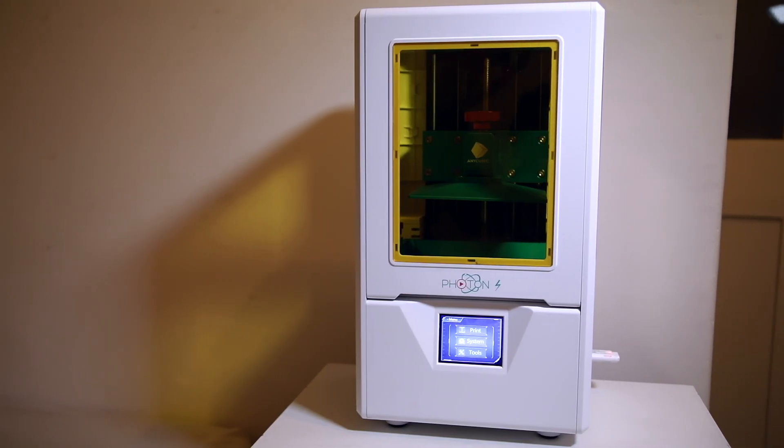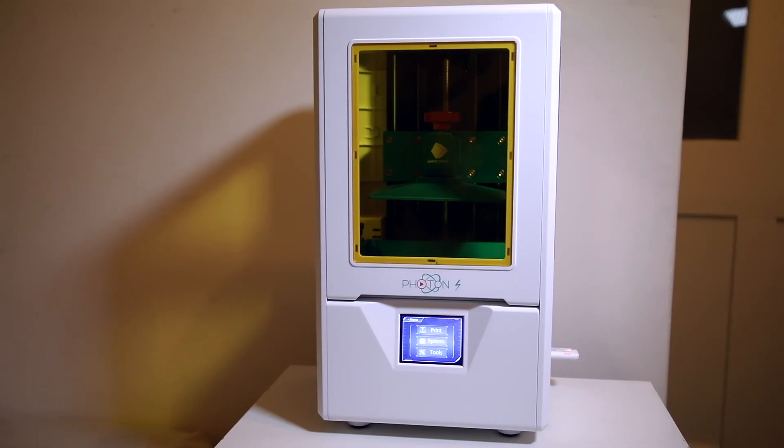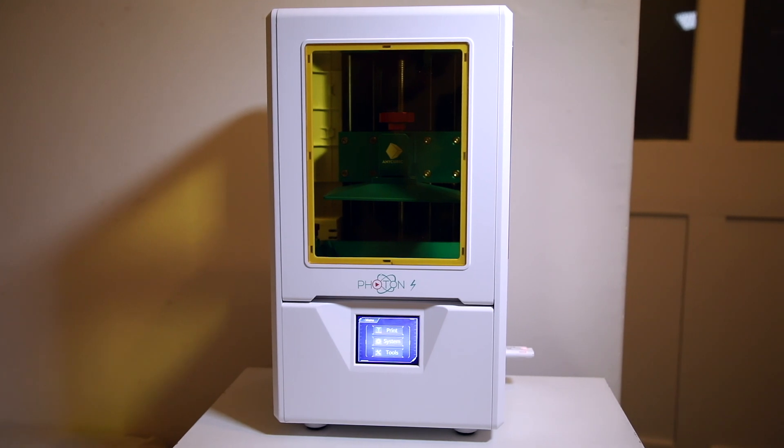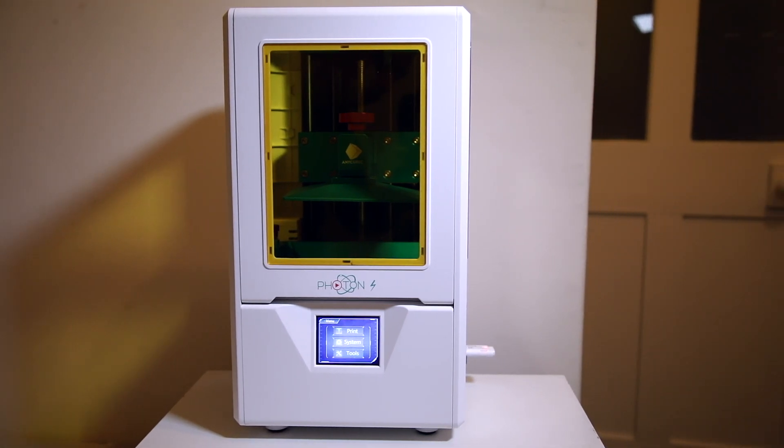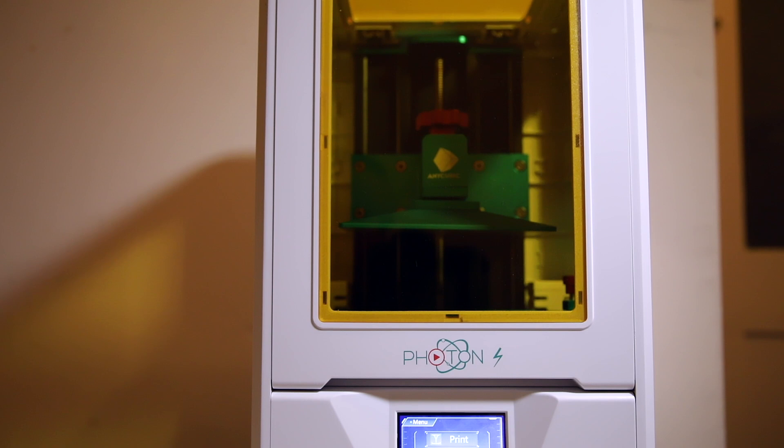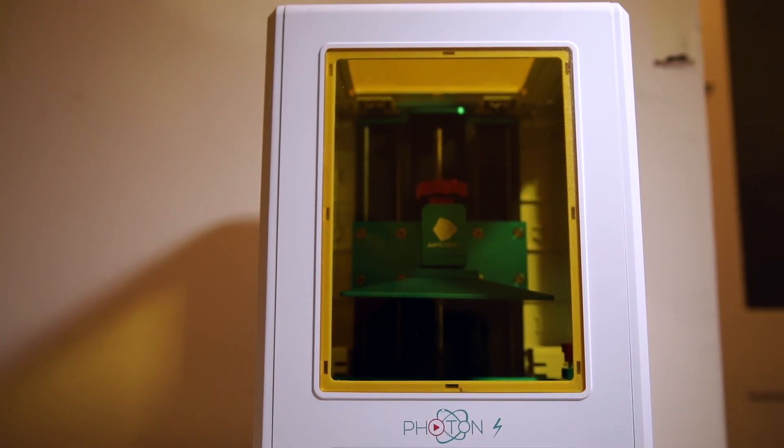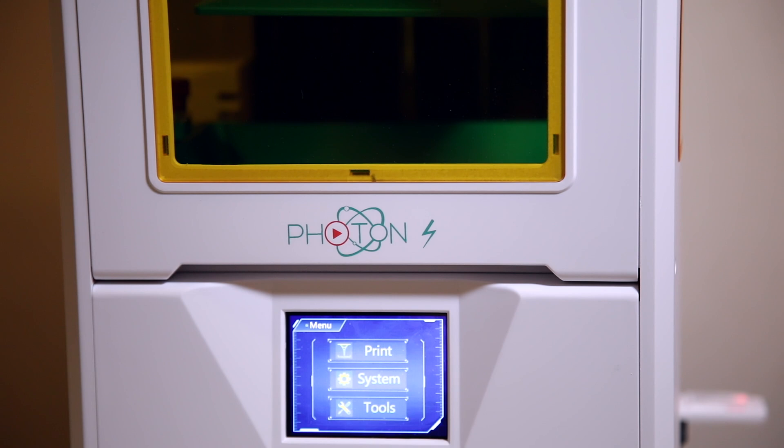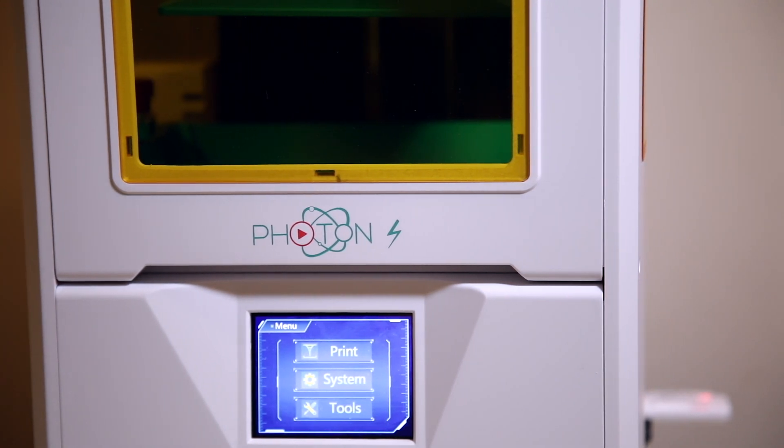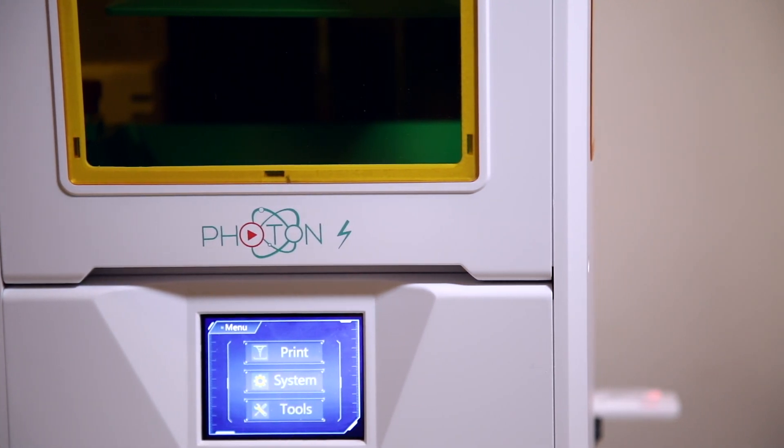The Photon S is a sleek compact unit. It's small enough to fit on most desks and it's not too noisy either. The futuristic door opens upwards to reveal your parts like something from the Blade Runner universe. On the front is a color touch screen which operates the printer and you use the included USB drive to put your sliced models on.